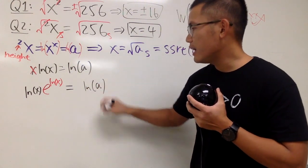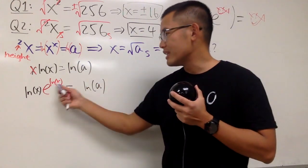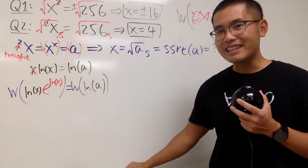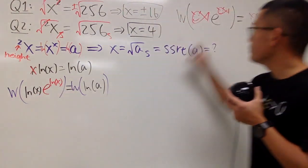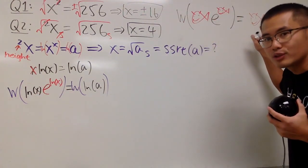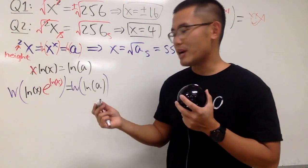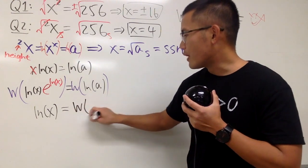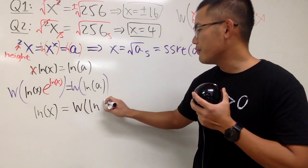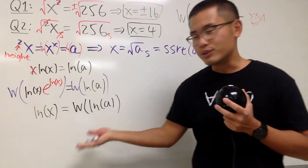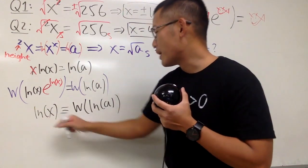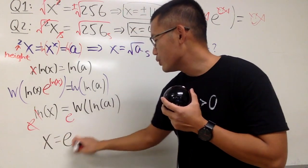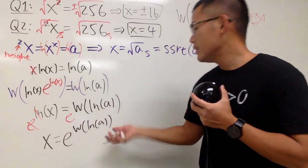And on the right-hand side, we have the natural log of a. Because this and that are the same now, we can just take the Lambert W functions on both sides, like that. And as you can see, when this and that are the same, when we take the Lambert W function, we just get this back, namely the fish. So we get ln of x, and that's equal to the Lambert W function of ln of a, like this. And of course, to solve for x, we can just do e to the power on both sides, so that this and that will cancel, and you see x will be e to the W of ln of a, like this.